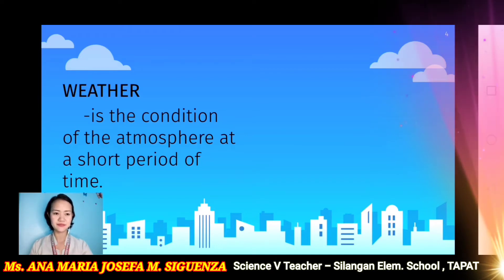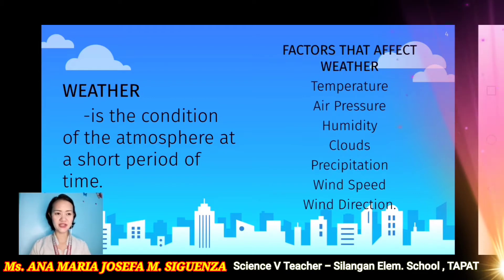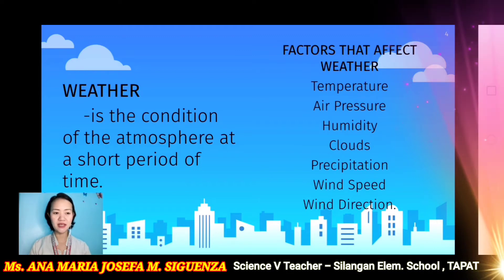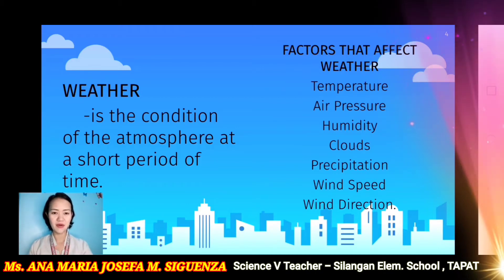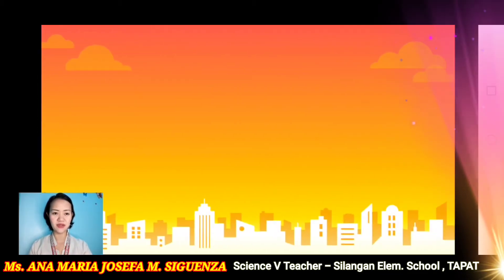What are the factors that affect the weather? These are temperature, air pressure, humidity, clouds, precipitation, wind speed, and wind direction. Once these factors change and affect the condition of the atmosphere, weather disturbances occur. Now, let us define what is a weather disturbance.